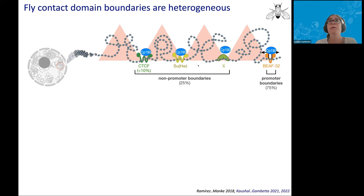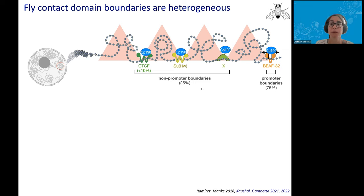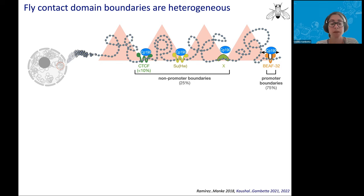There are two main categories of fly boundaries. The most abundant, 75% of all boundaries, are promoter boundaries because they're found at divergently transcribed housekeeping gene promoters. The remaining non-promoter boundaries are bound by CTCF, suppressor of hairy wing, and other proteins. But promoter and non-promoter boundaries all have one thing in common: they're all bound by a protein called CP190. Interestingly, all of these proteins that define the boundaries were originally described as insulator proteins, and insulator proteins are thought to prevent regulatory cross-talk.